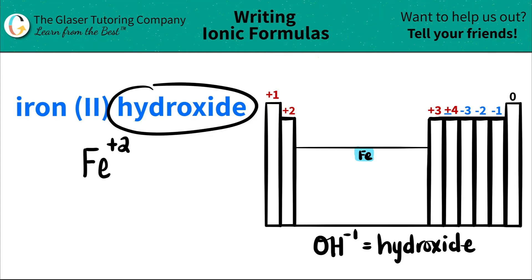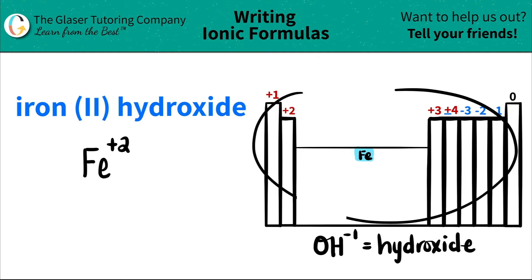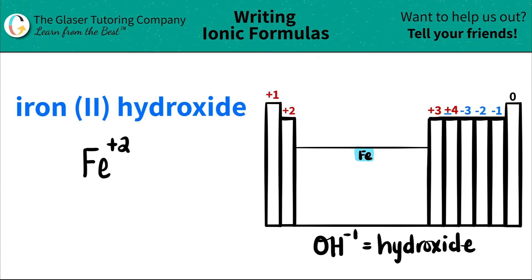The next thing I see is hydroxide. This one's a little tricky. I see that there's an IDE ending here, which chances are means that it's going to be a nonmetal. But if you search the periodic table for something that looks like hydroxide, you're not going to find it. Hydroxide is a polyatomic ion, even though it has the IDE ending. Remember that hydroxide is always an OH — it's an OH with a negative 1 charge.